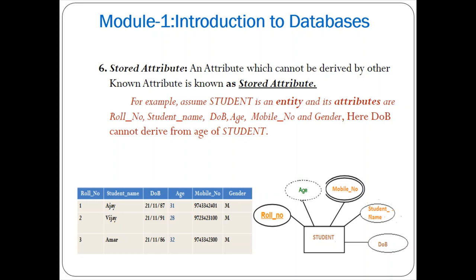The next type is stored attribute. An attribute which cannot be derived from other known attributes is known as a stored attribute. For example, date of birth cannot be derived from age — you cannot obtain the date of birth value using only age. Similarly, with total marks you cannot retrieve the individual subject marks (subject1, subject2, subject3). Such attributes that cannot be derived are called stored attributes.